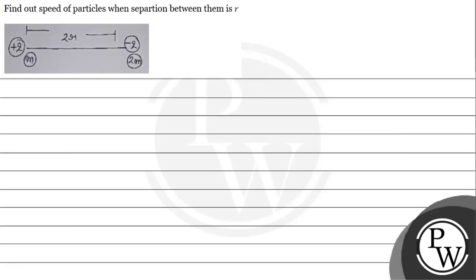Hello, let's read the given question. The question says we need to find out the speed of particles when separation between them is r. So here we have two charges given: plus q, minus q, and the two masses are m and 2m. When they are released, we will find speeds when separation is r.